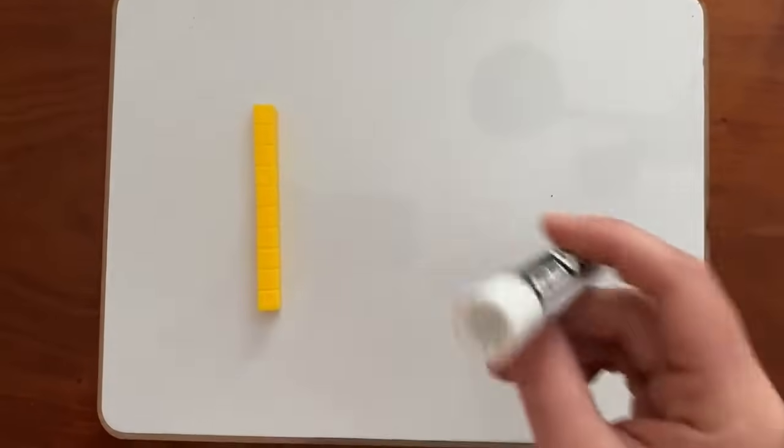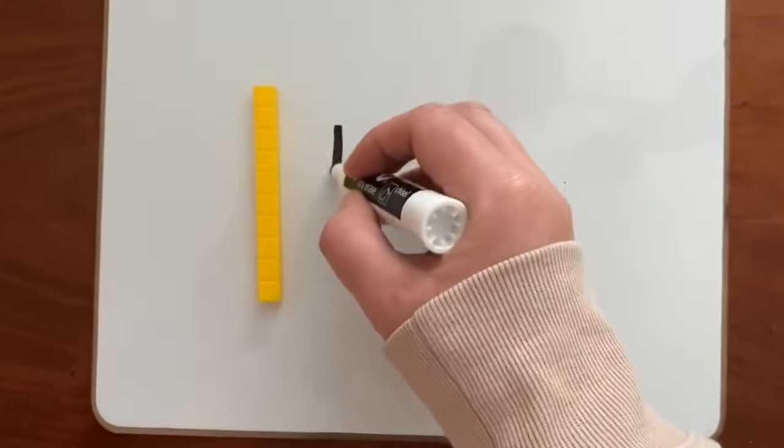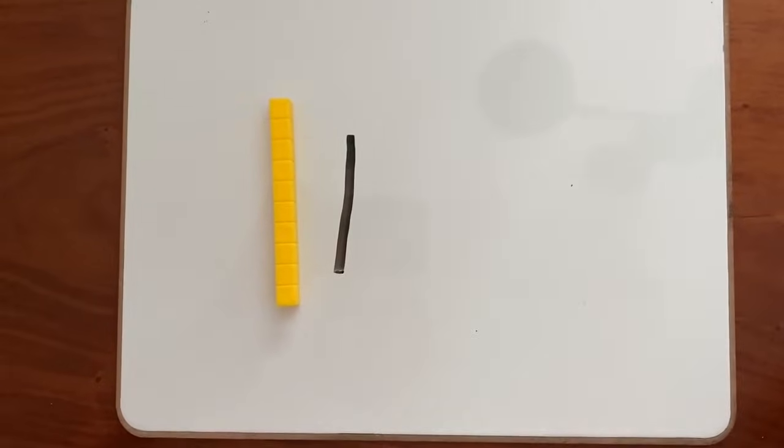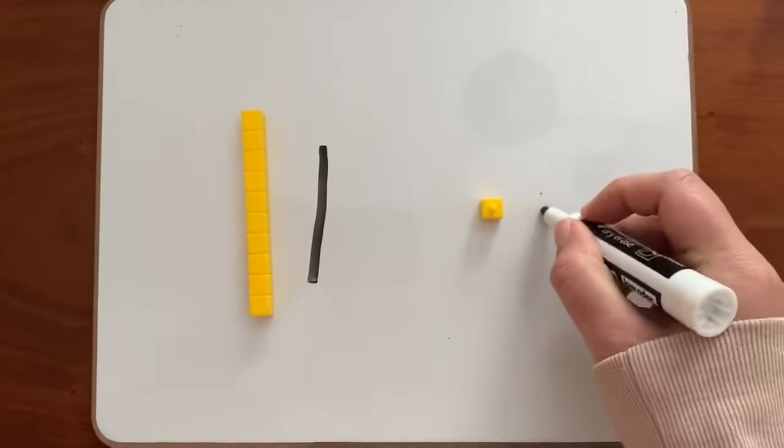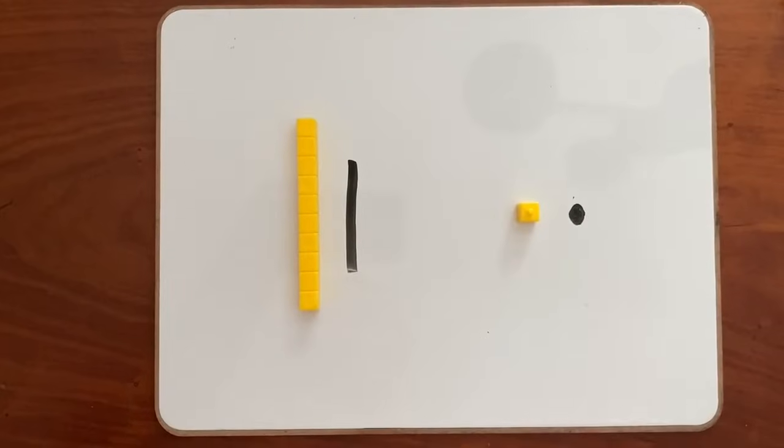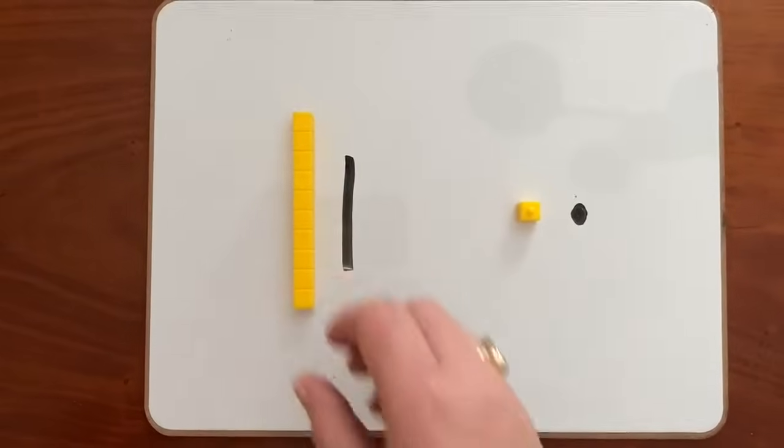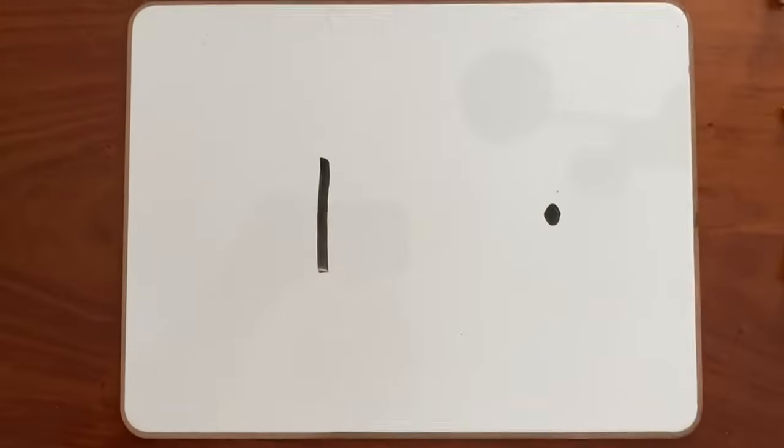Here's the thing: we don't all have longs and cubes at home to work with, but we can still use this method at home by making drawings. I'll show you how to solve a problem like this by drawing our longs and cubes. To represent a long, all we need to draw is one straight line. To represent a cube, all we need to draw is one little dot. For our next example, we are only going to use the drawings to help us find our answer.